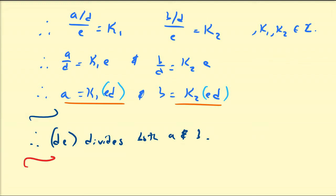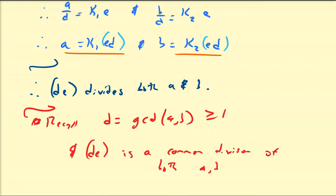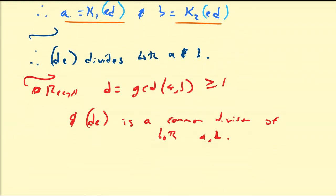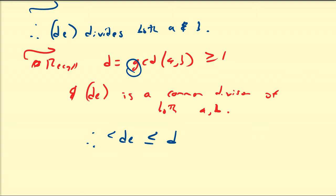This is important. Recall from our assumptions that D is the greatest common divisor of A and B, and both A and B are greater than or equal to 1. We just proved that DE is also a common divisor of both A and B. If D is the greatest common divisor of A and B, and DE is a common divisor of A and B, then DE must be less than or equal to D, because D is the greatest common divisor and DE is just a common divisor. Remember that all of these must be greater than or equal to 1.